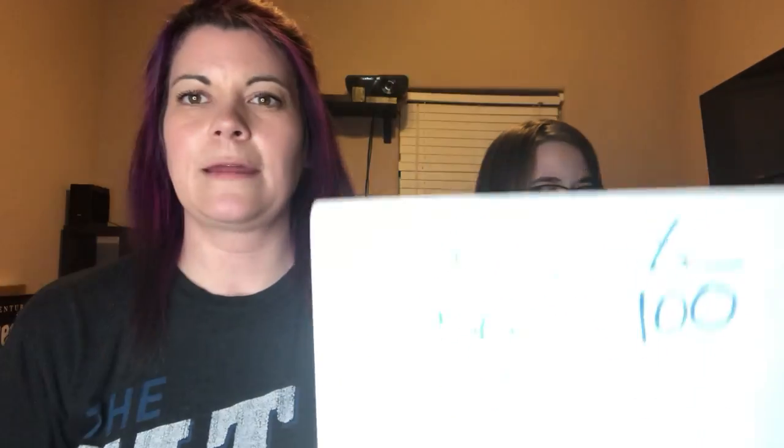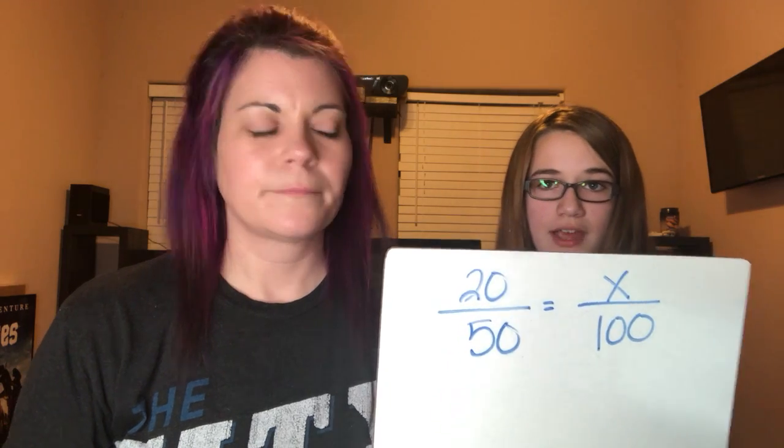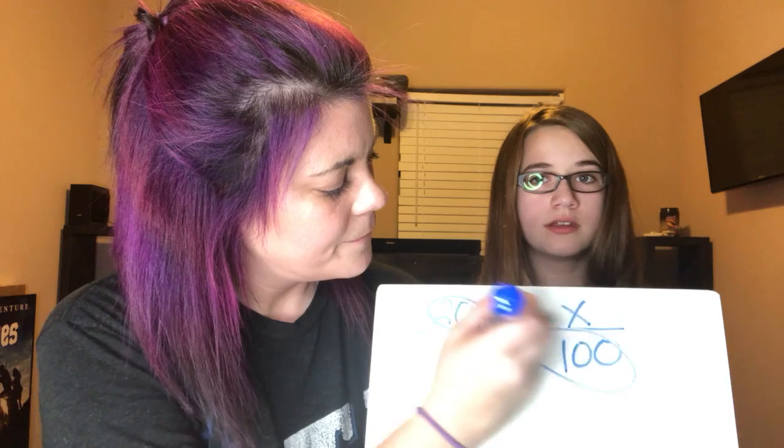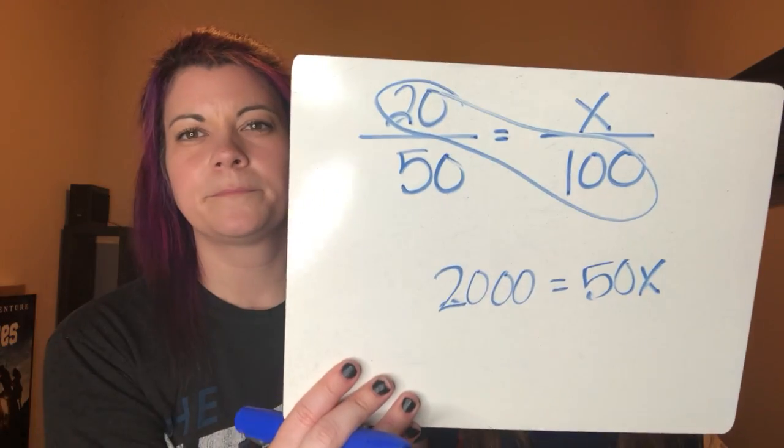So she started with 50 people and the second year had 30 — this is obviously a decrease. The difference is 50 minus 30, which equals 20. The original is what she started with: 50. So we put 20 over 50 equals x over 100. Using the butterfly method: 20 times 100 equals 2000, and 50 times x equals 50x. Dividing both by 50, you get 40 — it's a 40 percent decrease.